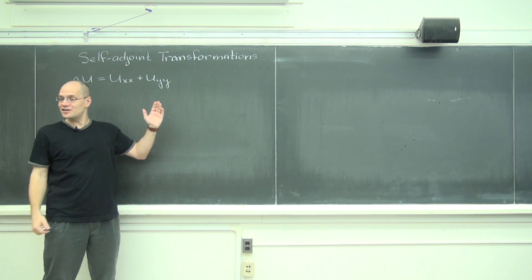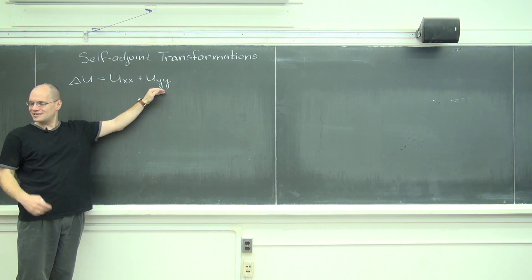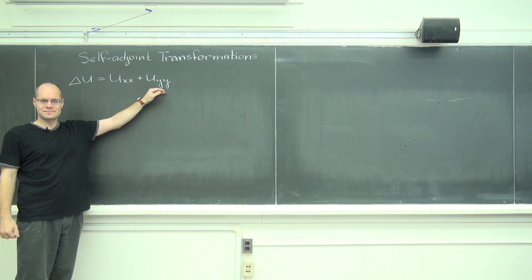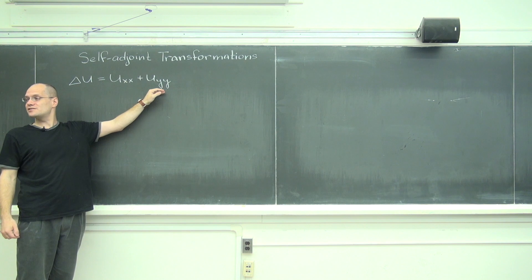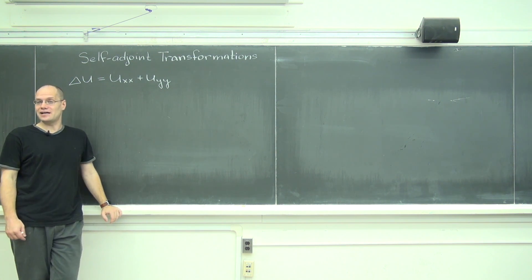So the part that's not controversial is that yes, we can think of it as a linear operator. It is linear, a linear operator on the space of functions. And so we can ask the question of its eigenvalues.